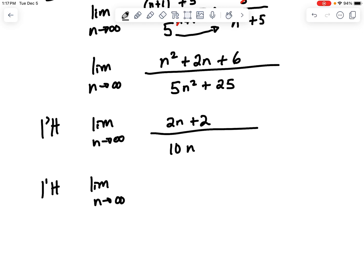And then this is going to be the derivative on the top is 2. The derivative on the bottom is 10. That equals a 1 fifth. And the ratio test says if you get something that's less than 1, it converges. Therefore, it converges. Oh, happy day.